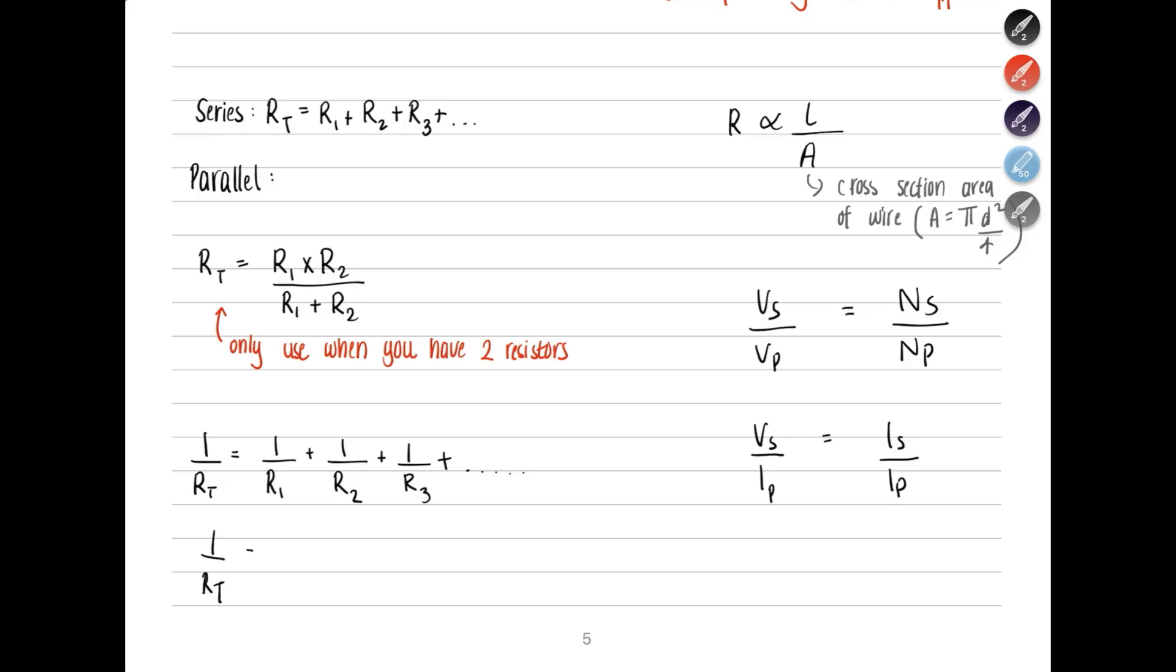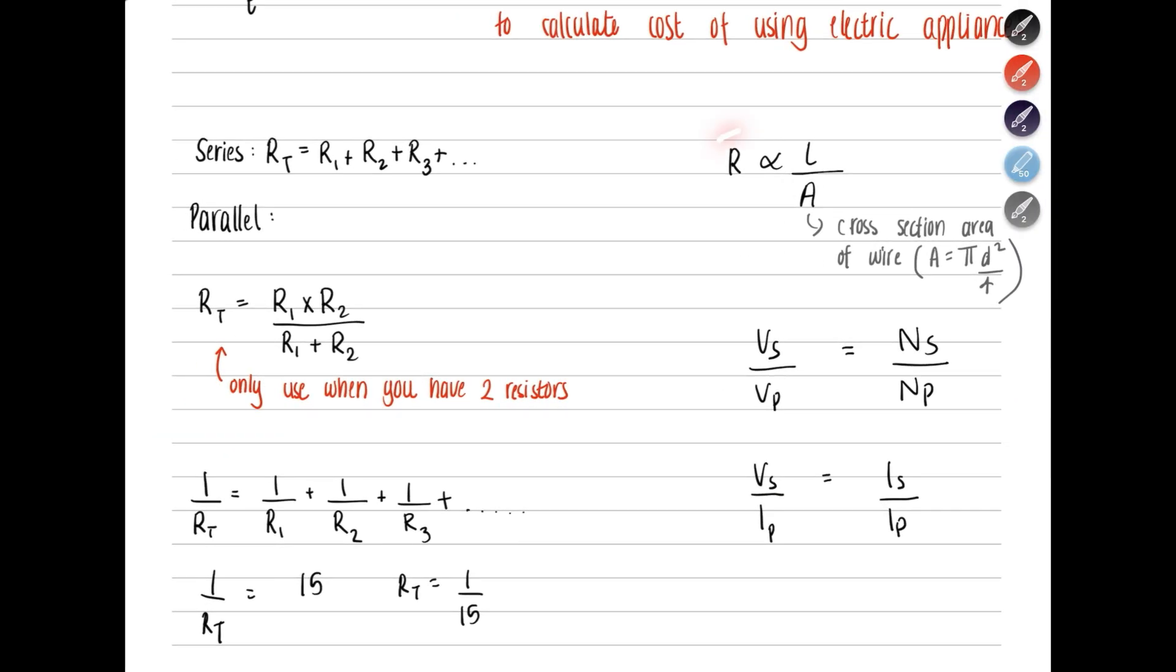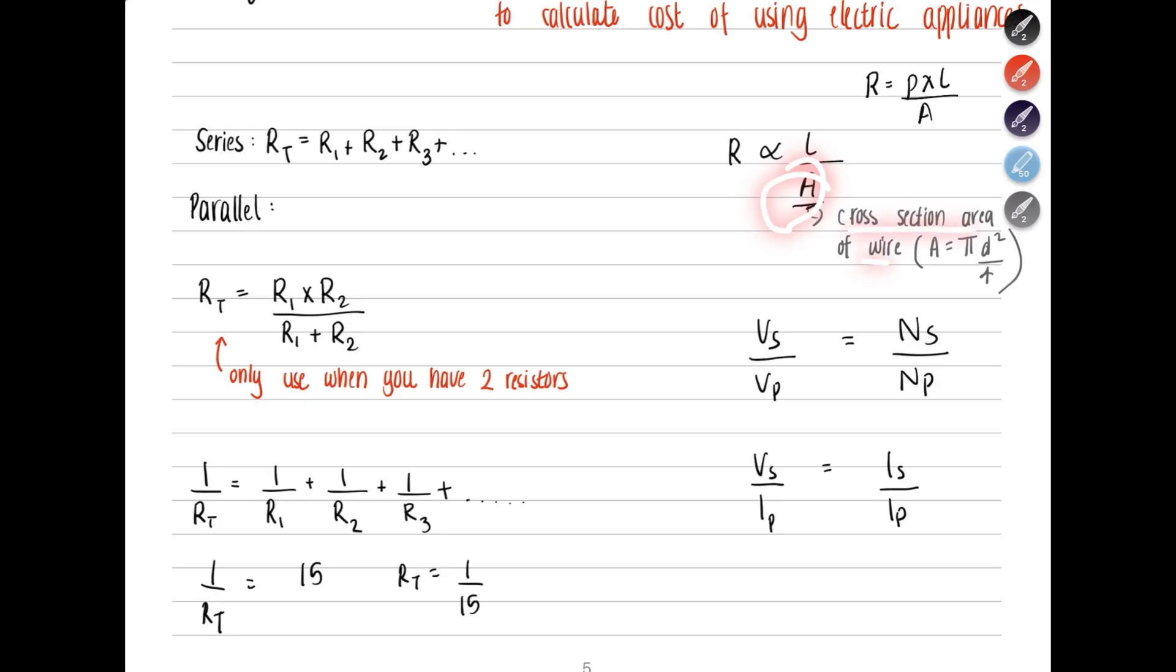And on the other side, you have this equation. Resistance is directly proportional to the length of the wire that you have and inversely proportional to area. You might also know this equation. You can remove this symbol of proportionality and write R equals resistivity multiplied by length over area. This is a constant which is different for every material. This is the cross-sectional area of wire. The formula for that is pi d squared divided by 4.